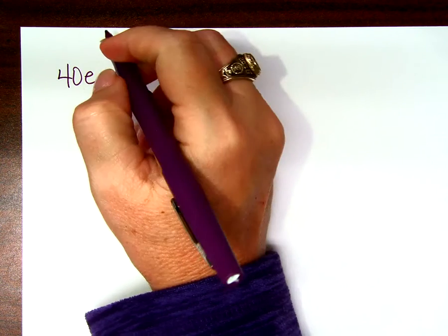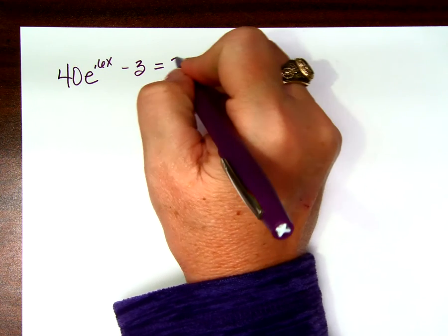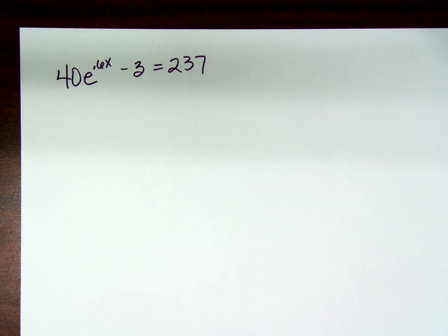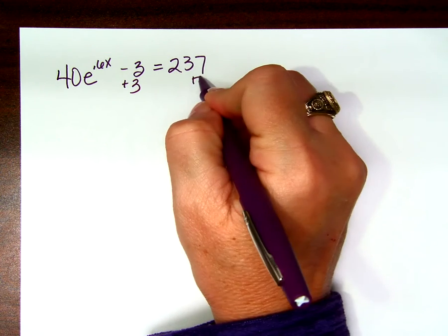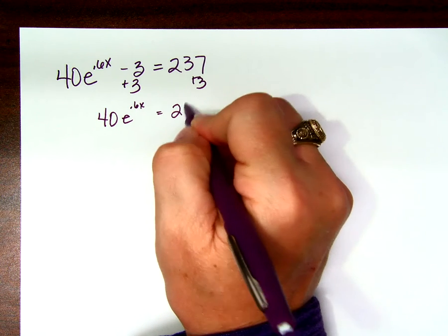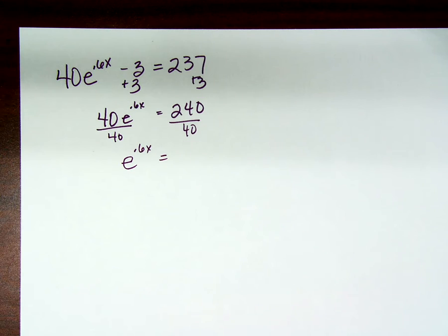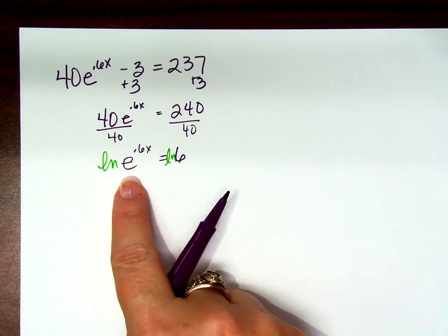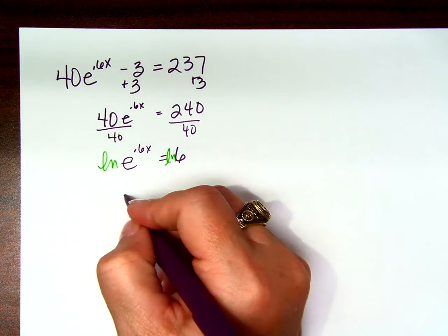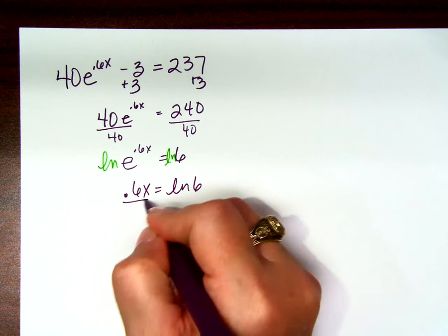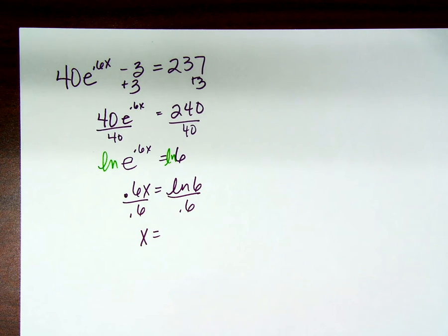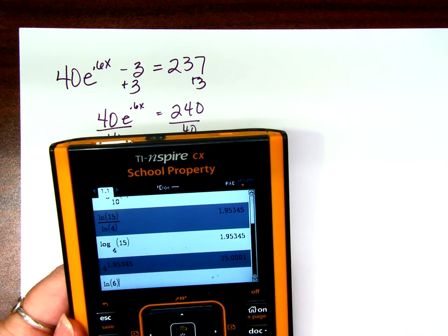40 times e raised to the 0.6x power minus 3 equals 237. How would I solve this one? Adding 3 to both sides: 40e to the 0.6x equals 240. Dividing both sides by 40: e to the 0.6x power equals 6. What kind of log do I want to take this time? There's a really giant hint — there's an E. Take natural log. The natural log of e is 1, so I'm left with my exponent. 0.6x equals the natural log of 6. Natural log of 6 divided by 0.6 gives 2.98627.